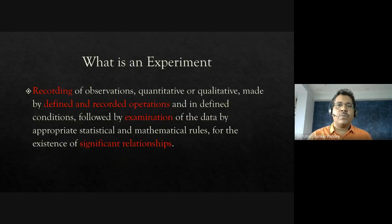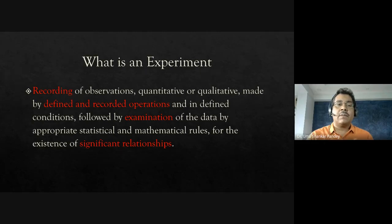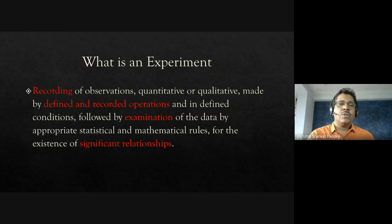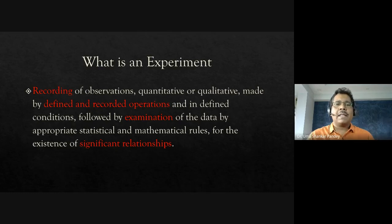A classic definition of an experiment describes it as a recording of observations — quantitative or qualitative — made by defined and recorded operations, under defined conditions. This is followed by examination of the data using appropriate statistical and mathematical rules to find out whether there are significant relationships between the dependent and independent variables.